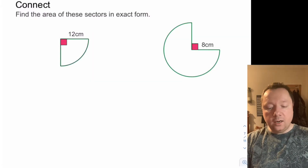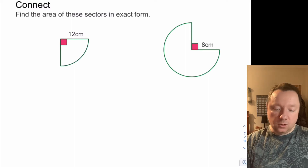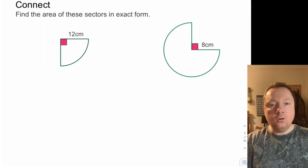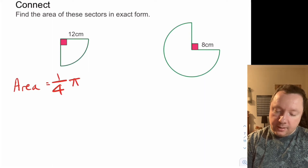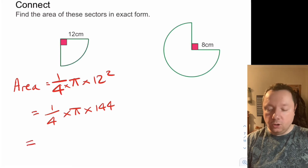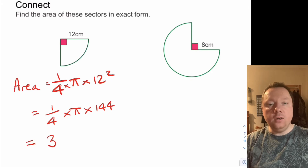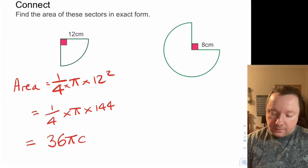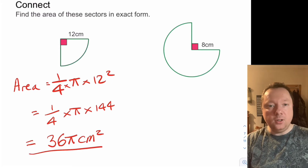Let's look at examples where you have to leave it in exact form — in terms of pi — without using a calculator. The first one is a right angle, so it's a quarter of a circle: 90 out of 360. The area is a quarter times pi times 12 squared — a quarter times pi times 144. 4 into 14 is 3 remainder 2, then 4 into 24 is 6, giving 36. So it's 36 pi centimetres squared — exact form, because if you do 36 times pi you then end up rounding your answer.